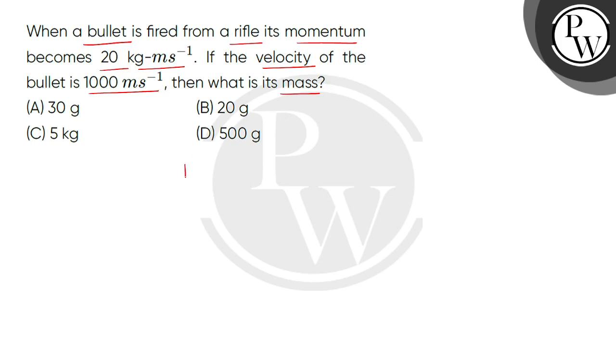Given the bullet's momentum is 20 kg meter per second. Now, the velocity of the bullet is 1000 meter per second, and we have to find the bullet's mass.